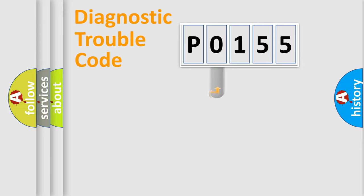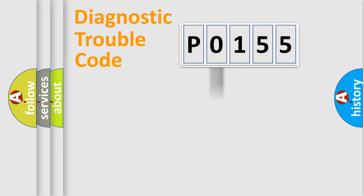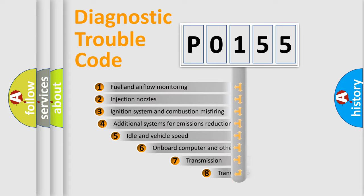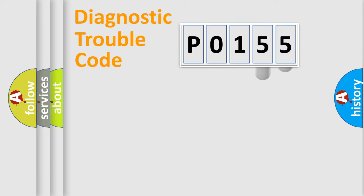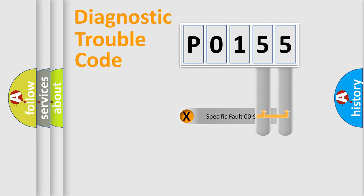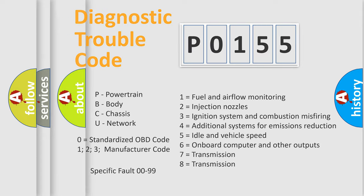This distribution is defined in the first character of the code. If the second character is expressed as zero, it is a standardized error. In the case of numbers 1, 2, or 3, it is a more specific car-manufacturer expression. The third character specifies a subset of errors. This distribution is valid only for the standardized DTC code. Only the last two characters define the specific fault of the group, and this division is valid only if the second character is zero.